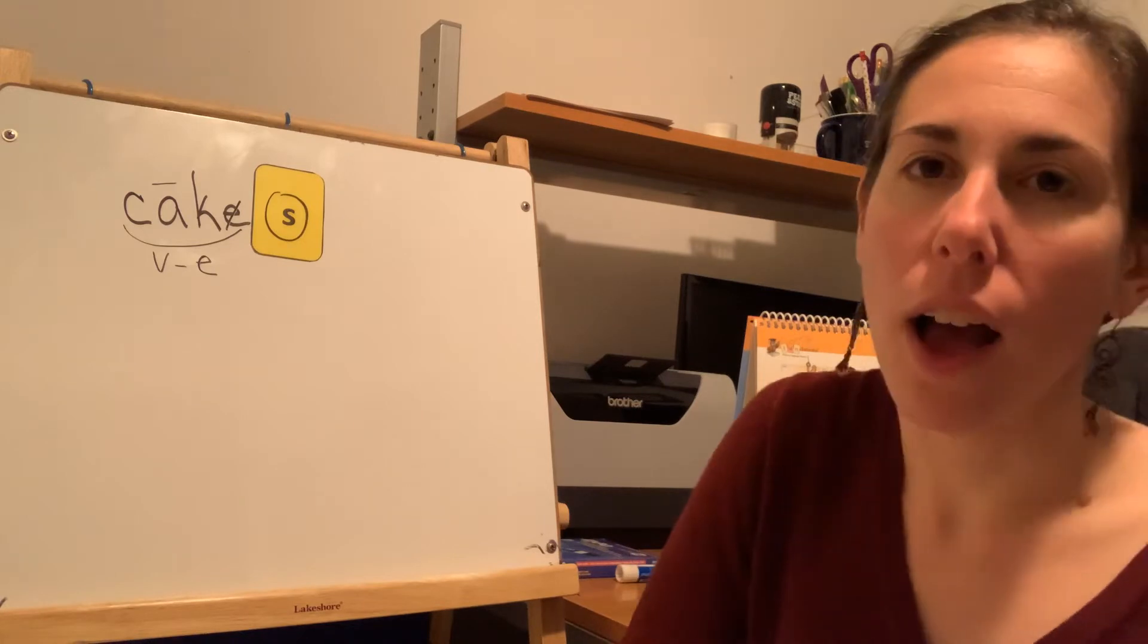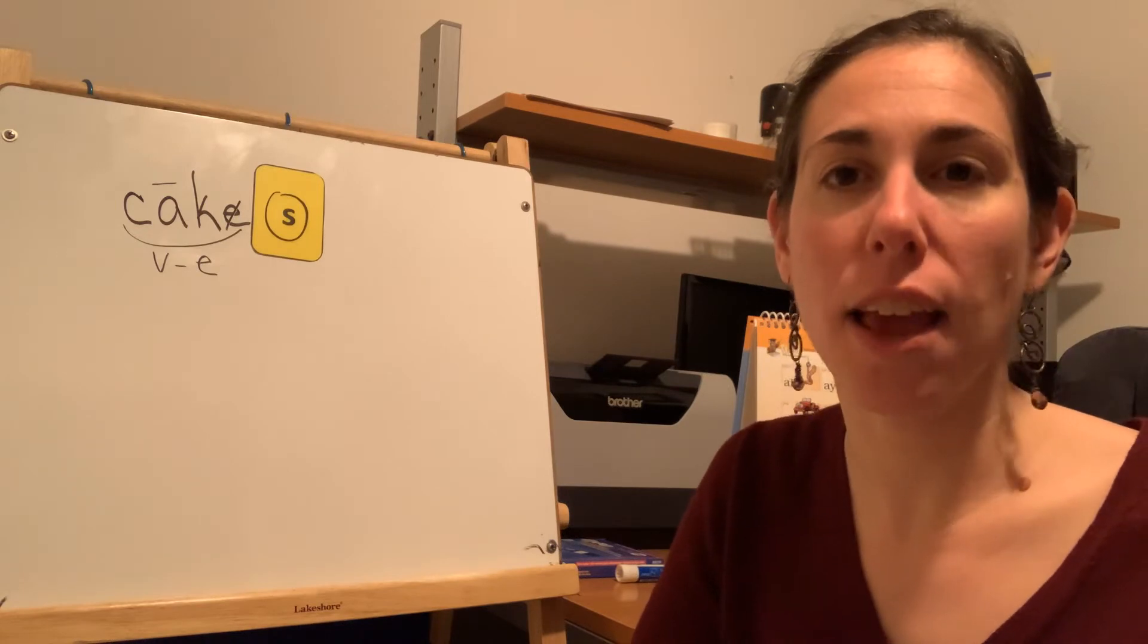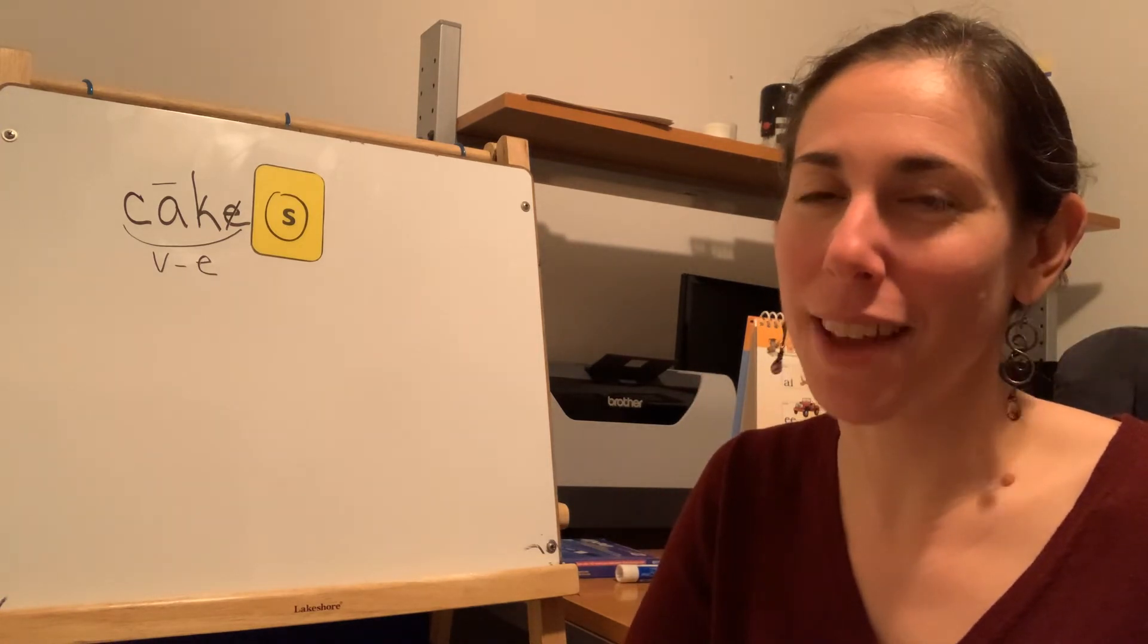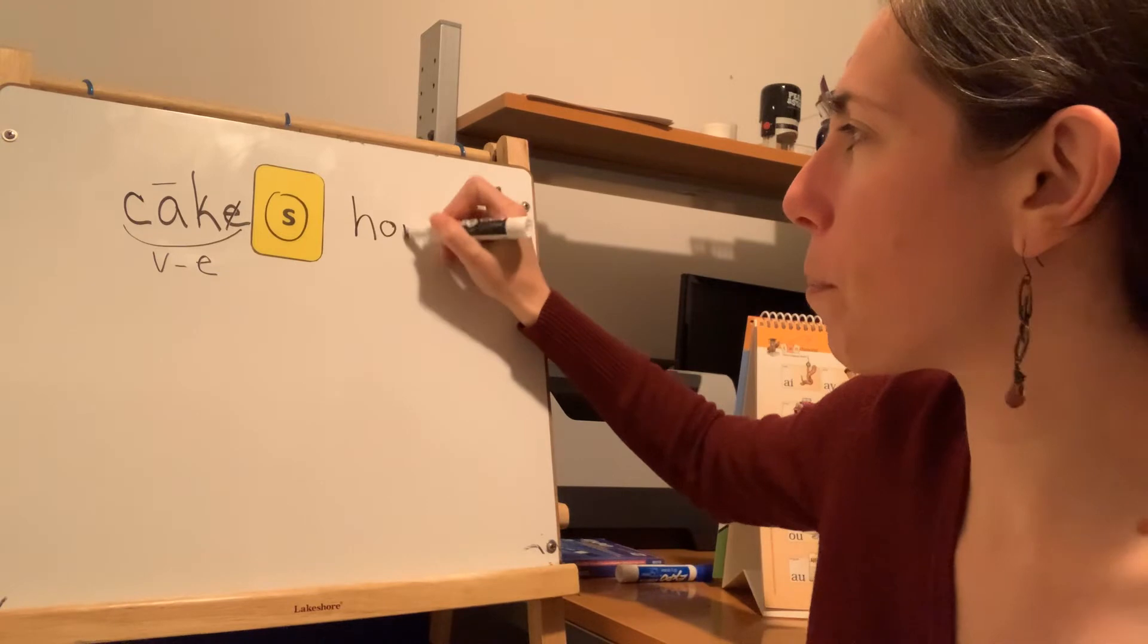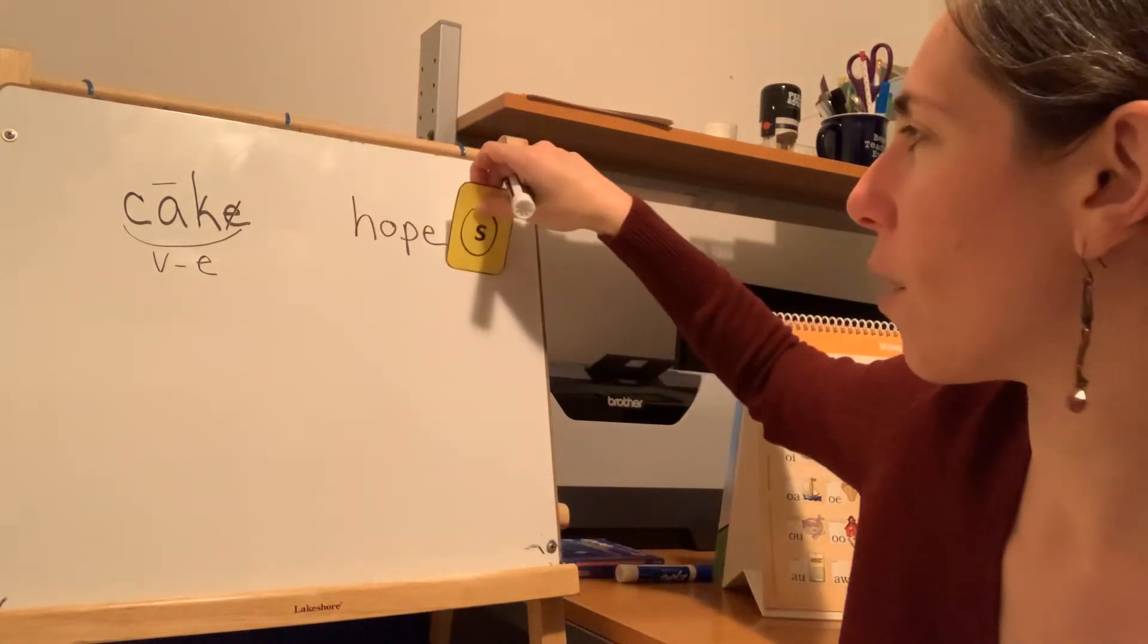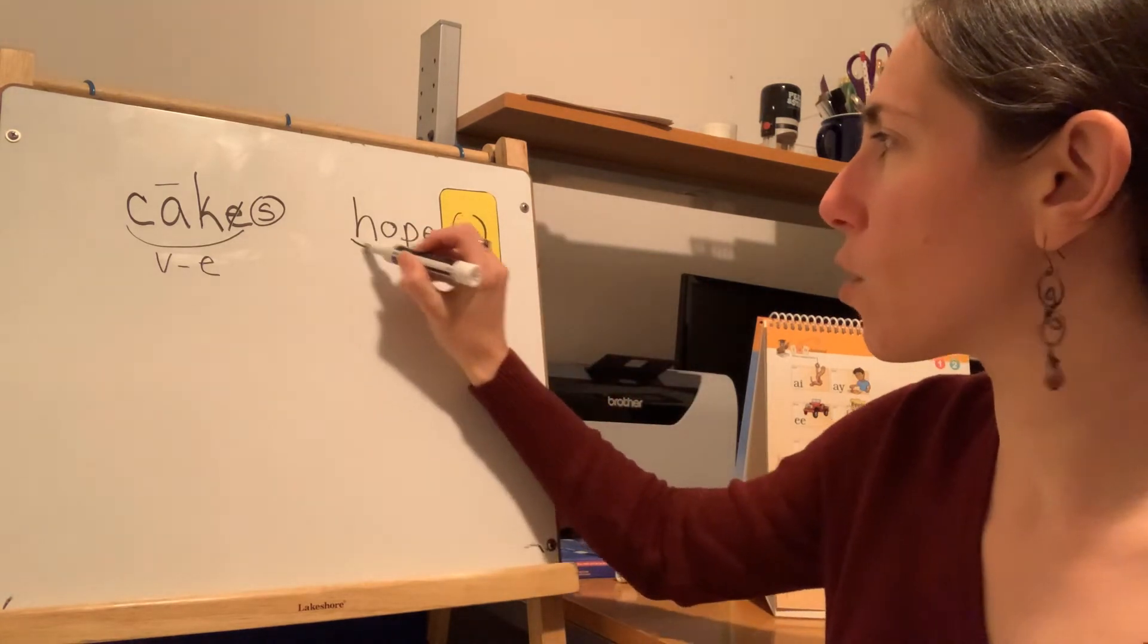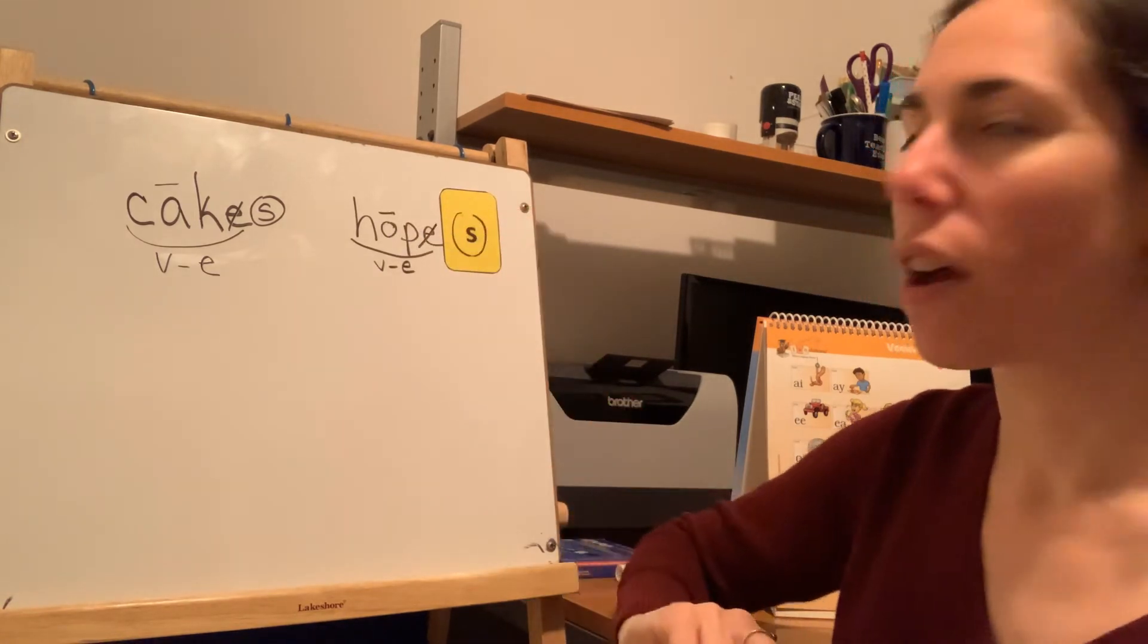Let's do another long vowel with suffix S. How about hopes. Say hopes. Tap hopes. H-O-P-E. Hope. I just tapped out the base word without the suffix. So we've got hopes, H-O-P-E, and then we're going to move our suffix card over there. The suffix is separate, scoop the base word, vowel-consonant-E, macron, cross it out.